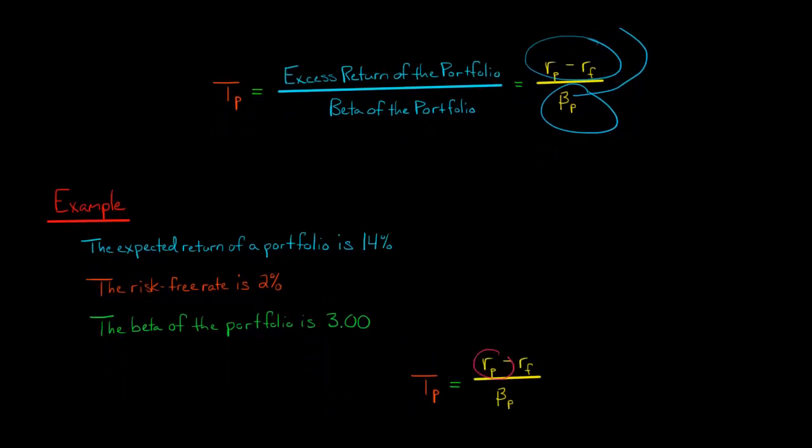We say, what's the expected return of the portfolio? That's 14%. We take 14% minus the risk-free rate, which is 2%, so minus 2%. Then we divide that by the beta of the portfolio, which is 3.